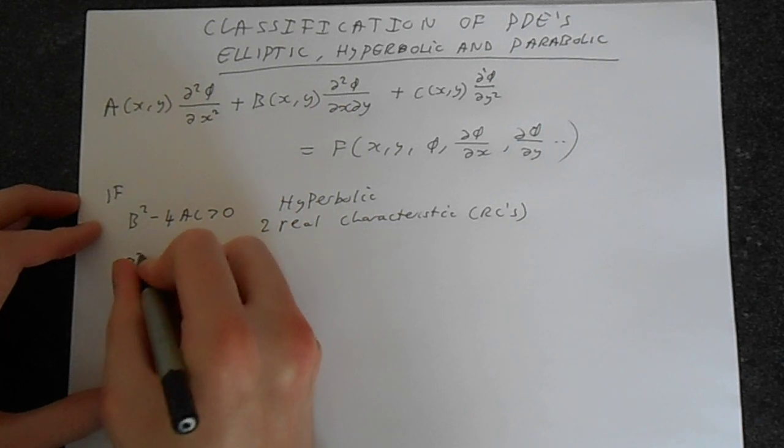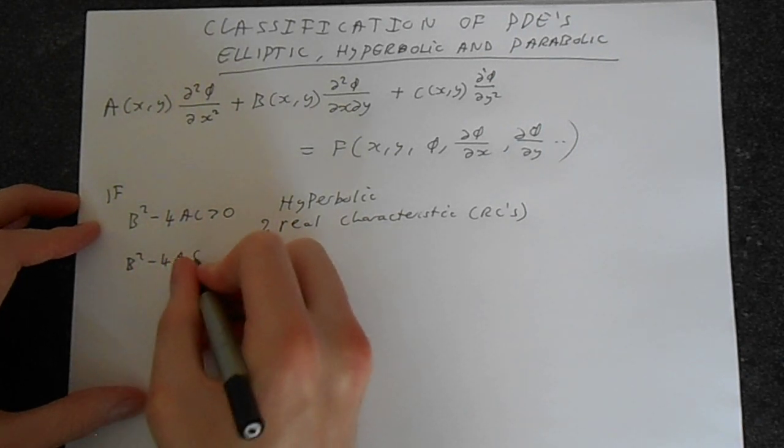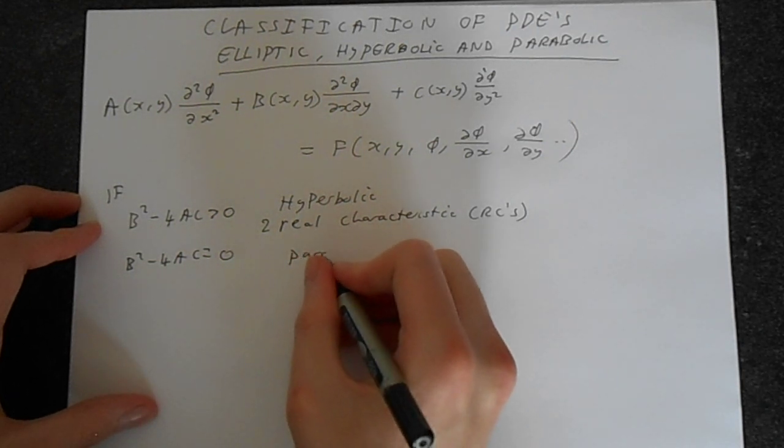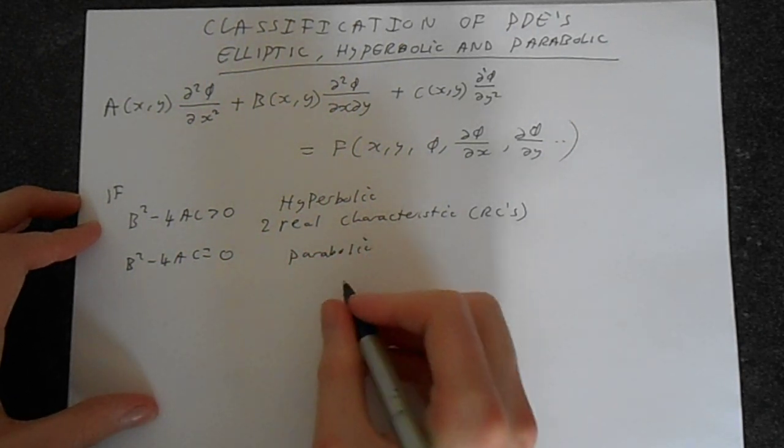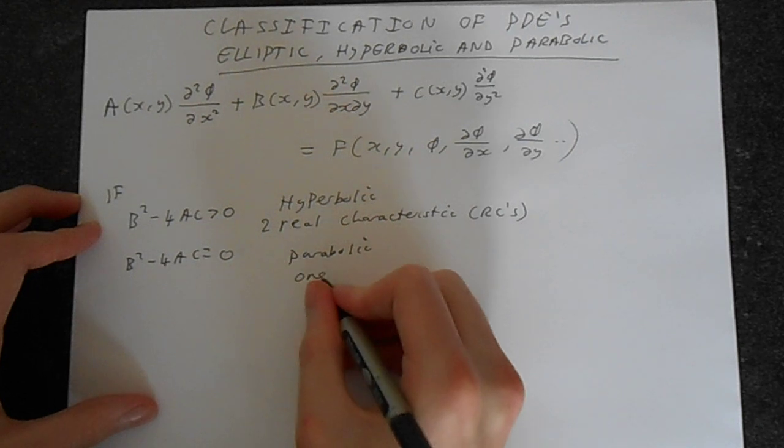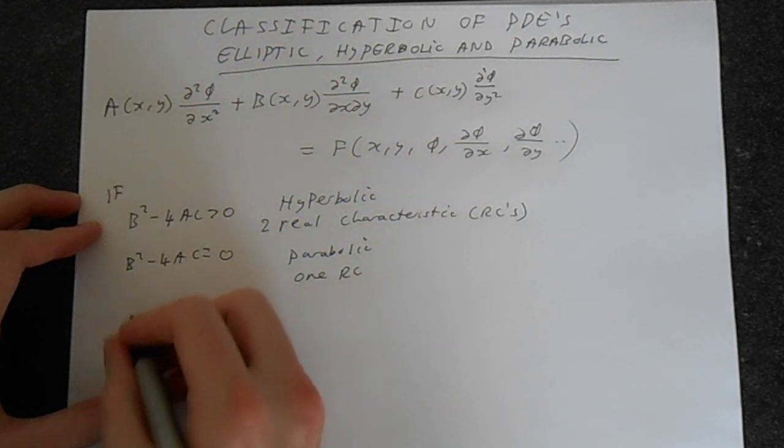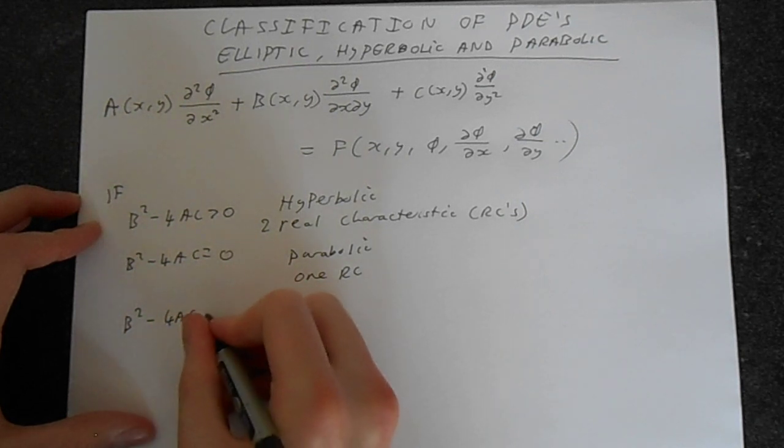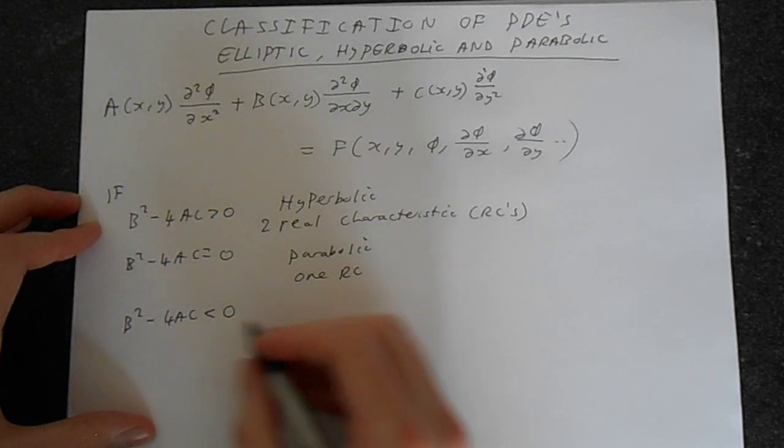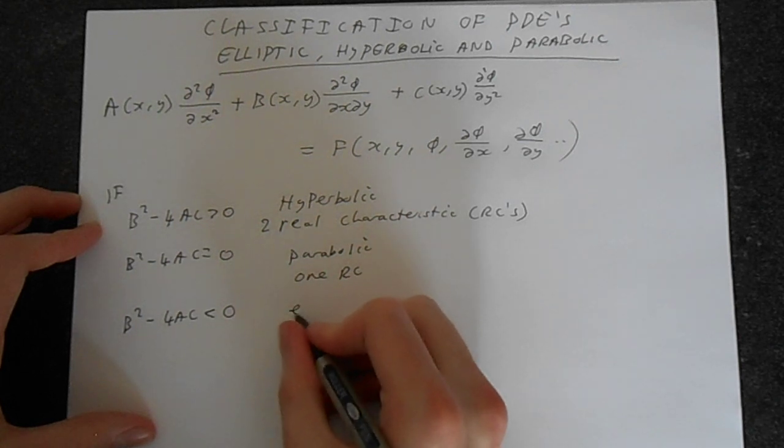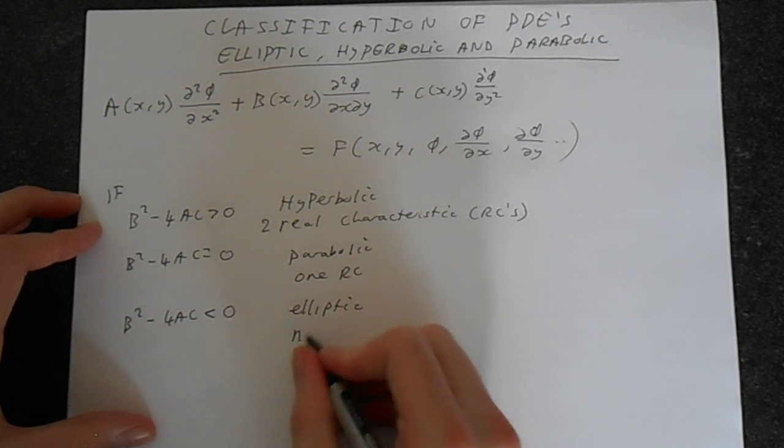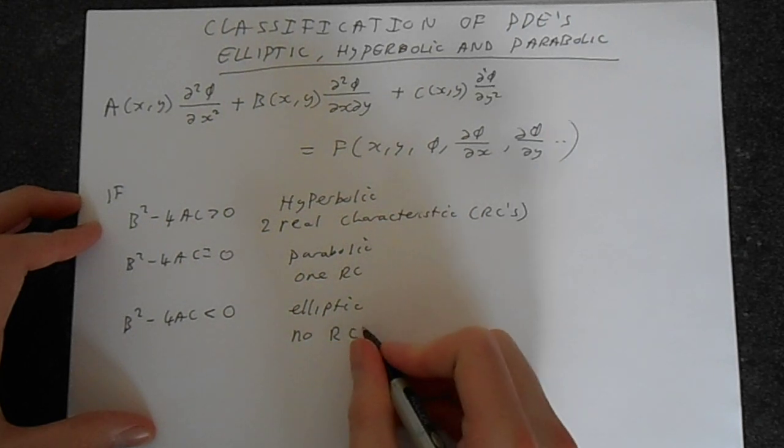If we've got b squared minus 4ac is equal to 0, then that means we've got a parabolic PDE. And that's got one real characteristic and if b squared minus 4ac is less than 0, so we're getting a negative number here, that's going to be elliptic which means we have no real characteristics.